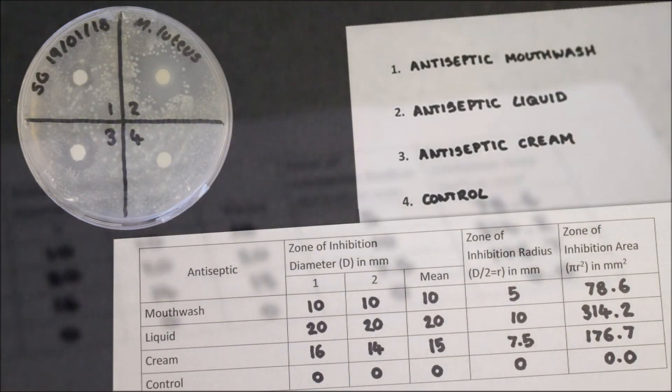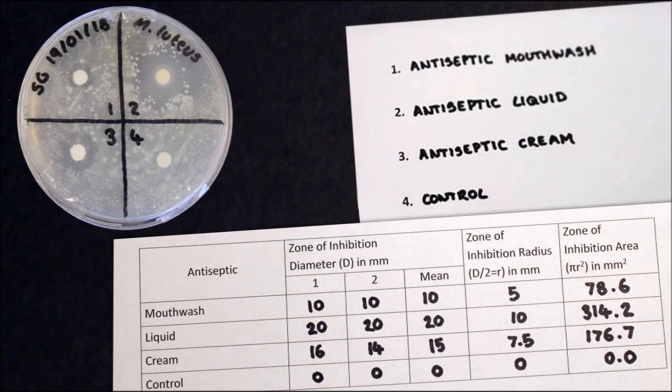In conclusion we can say the antiseptic liquid was most effective at preventing the growth of the bacterium Micrococcus luteus, followed by the antiseptic cream and finally the mouthwash. In fact when we compare the area of the zones of inhibition we can see that the antiseptic liquid was four times more effective than the mouthwash.